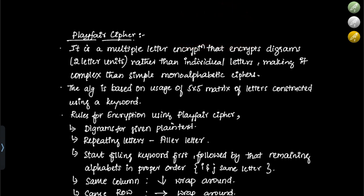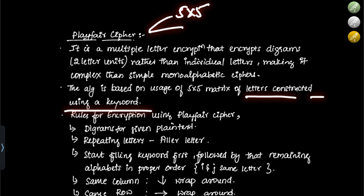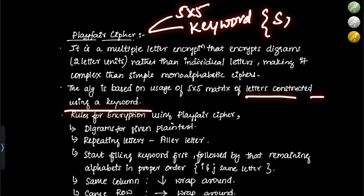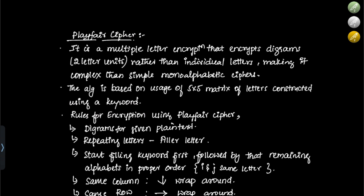This algorithm is based on usage of a 5×5 matrix of letters constructed using a keyword. For Playfair cipher we require a 5×5 matrix, a keyword which must be the same at both the sender and receiver end, and the plain text — the message which needs to be transported or communicated.